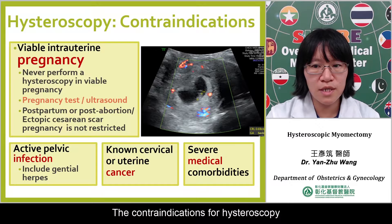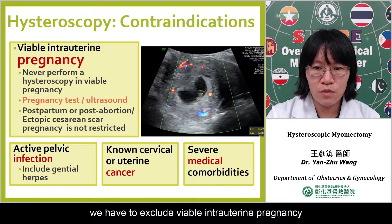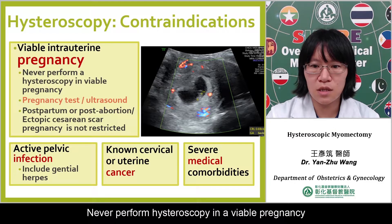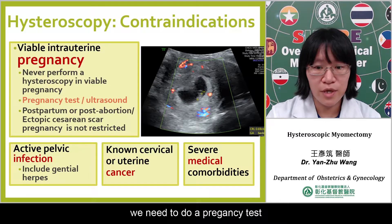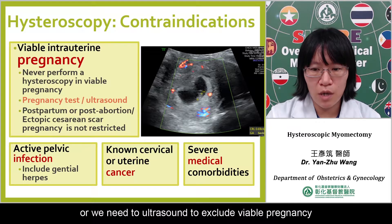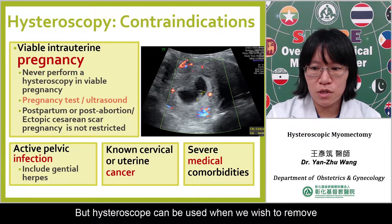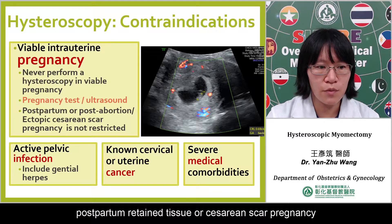The contraindications for hysteroscopy: rule number one, we have to exclude viable intrauterine pregnancy. Never perform a hysteroscopy in a viable pregnancy. Before we do a hysteroscopy, we need to do a pregnancy test or an ultrasound to exclude viable pregnancy. However, hysteroscopy can be used when we wish to remove postpartum retained tissue or cesarean scar pregnancy.